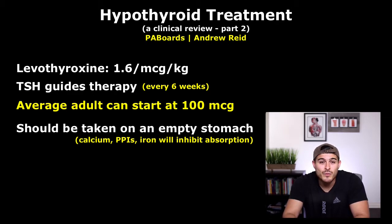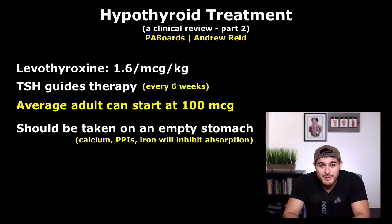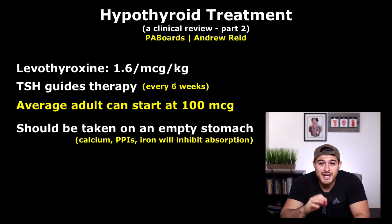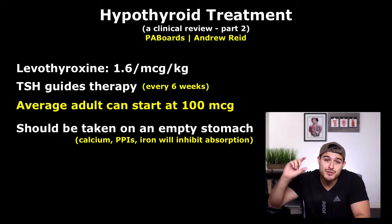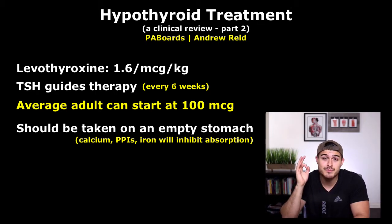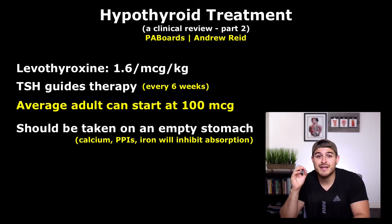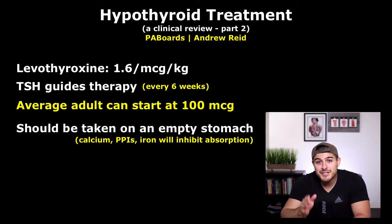Once the patient has reached a euthyroid state, we can check TSH yearly — conveniently at their annual physical exam. We should check sooner if symptoms develop. We must also be careful not to over-treat, because subclinical hyperthyroidism and overt hyperthyroidism increase the risk of atrial fibrillation. Over-treating is like giving too many stimulants — it overworks the heart and is dangerous.